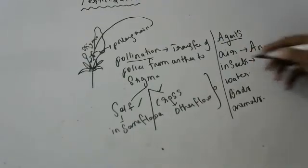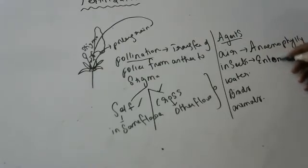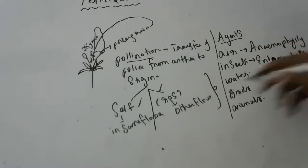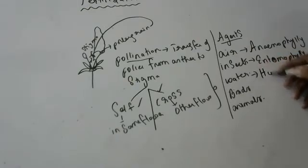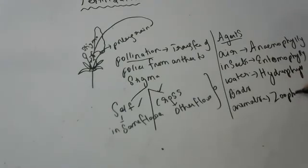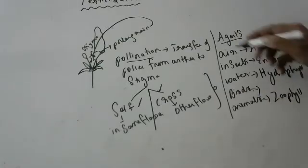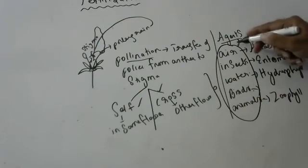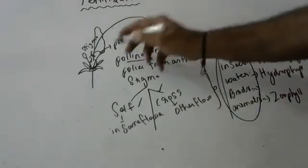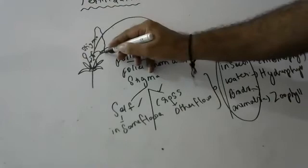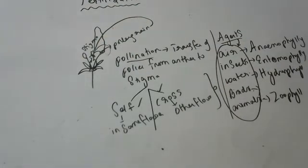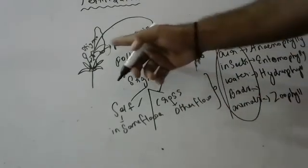If pollination occurs by insects, it is called entomophily. If pollination occurs by water, it is called hydrophily. If pollination occurs by animals, it is called zoophily. There are many others. Agents of pollination cause the pollen grain to go and fall on the stigma — transfer of pollen from anther to stigma.